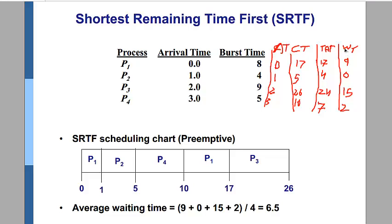Now we calculate waiting time. Waiting time is equal to turnaround time minus burst time: 17 minus 8 is 9, 4 minus 4 is 0, 24 minus 9 is 15, and 7 minus 5 is 2.